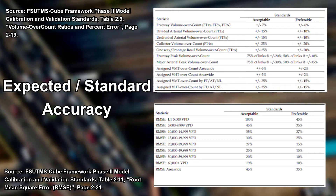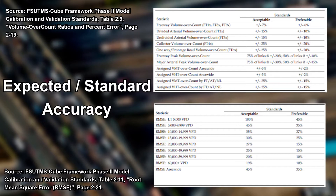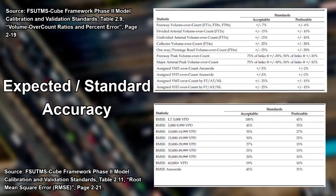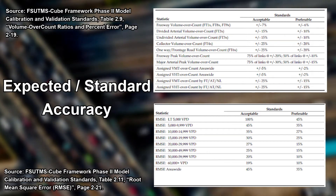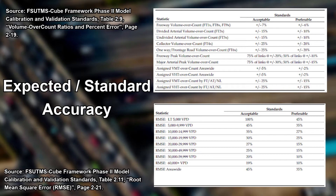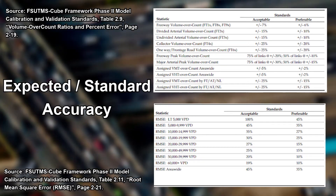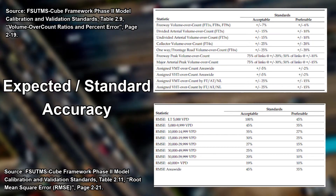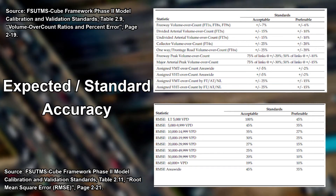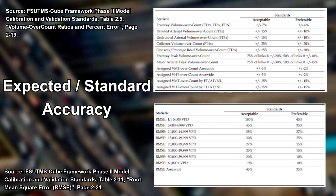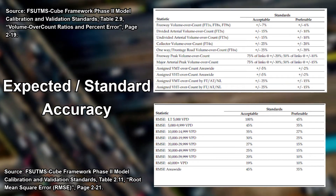As shown in the first table, different types of roadways warrant different levels of accuracy when making traffic volume projections. Freeway projections require greater accuracy than those for a divided arterial, requiring projections to be within 7% and 15% from real-world counts respectively. As shown in the second table, the amount of accuracy required for a traffic projection increases with the number of vehicles per day that use that roadway segment. Notice that the gap between acceptable and preferable accuracy decreases as roadway volume increases.